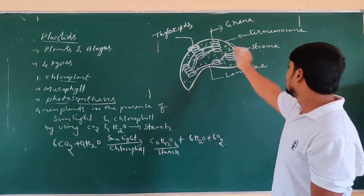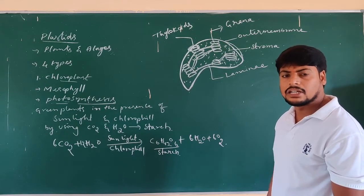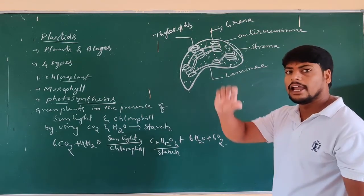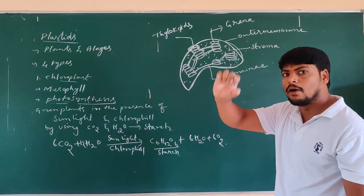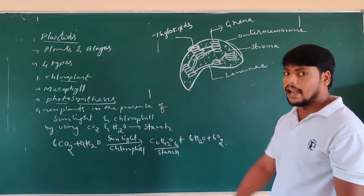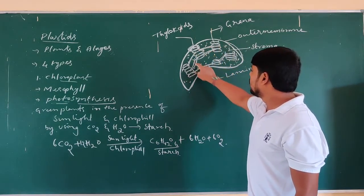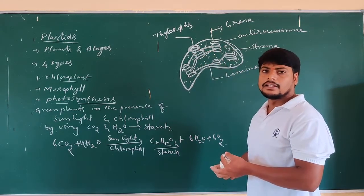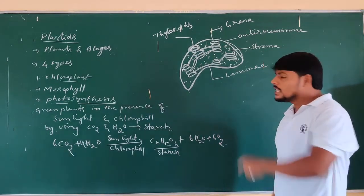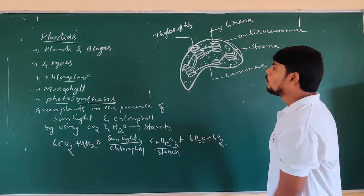So in summary, the chloroplast consists of a double membrane structure, containing thylakoids. All thylakoids are arranged one above the other — like stacking coins — and that structure is called grana. All the grana are connected to one another by means of thread-like structures called lamellae. That is the structure of the chloroplast.